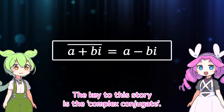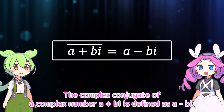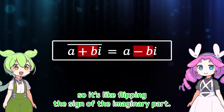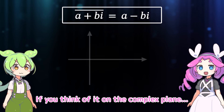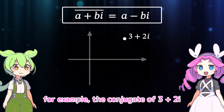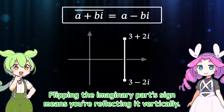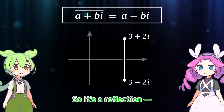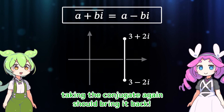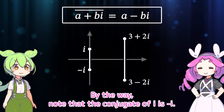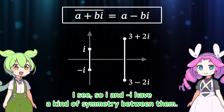The key to this story is the complex conjugate. The complex conjugate of a complex number a plus bi is defined as a minus bi — you're replacing plus bi with minus bi, flipping the sign of the imaginary part. If you think of it on the complex plane, the conjugate of 3 plus 2i is 3 minus 2i — flipping the imaginary part's sign means you're reflecting it vertically. Taking the conjugate again brings it back, so the complex conjugate has a kind of symmetry. Note that the conjugate of i is negative i — so i and negative i have a kind of symmetry between them.